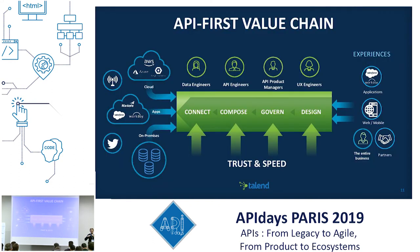If you design and develop great APIs, you can achieve great digital experiences. Data is a really key component of these APIs. The API-first value chain is in some ways similar on both sides, but the approach really starts from the right. Design, governance, composition, integration, and connectivity are key. Personas include data engineers but also other skills — UX engineers, product managers — all working together to build great APIs.